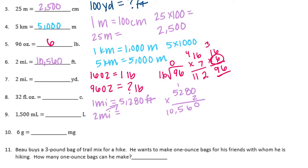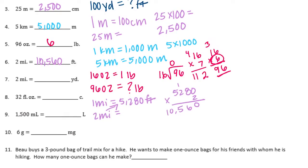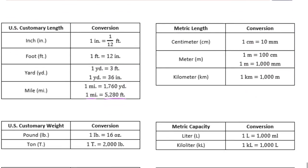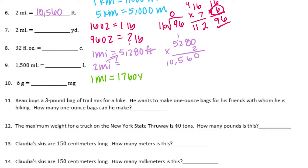Number 7: 2 miles is equal to how many yards? So 1 mile is equal to 1,760 yards — yep, there it is, 1,760 yards. So 2 miles would be 2 times 1,760, and we would multiply those together to get 3,520 yards.